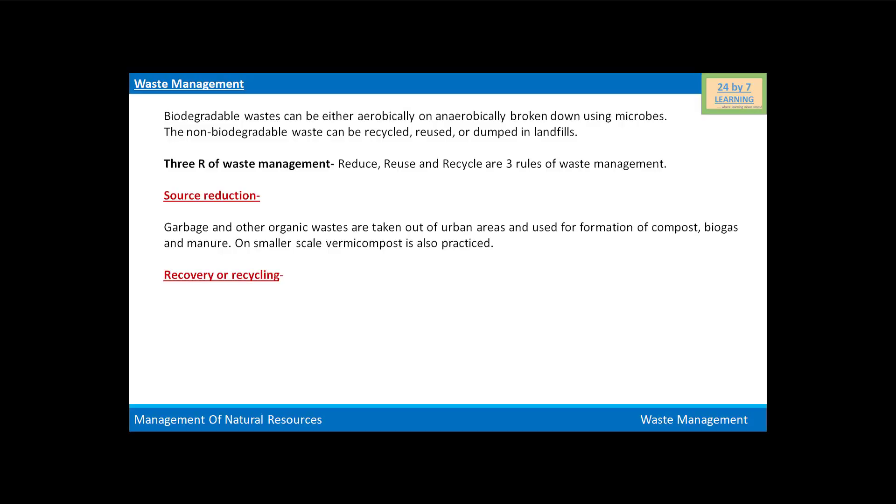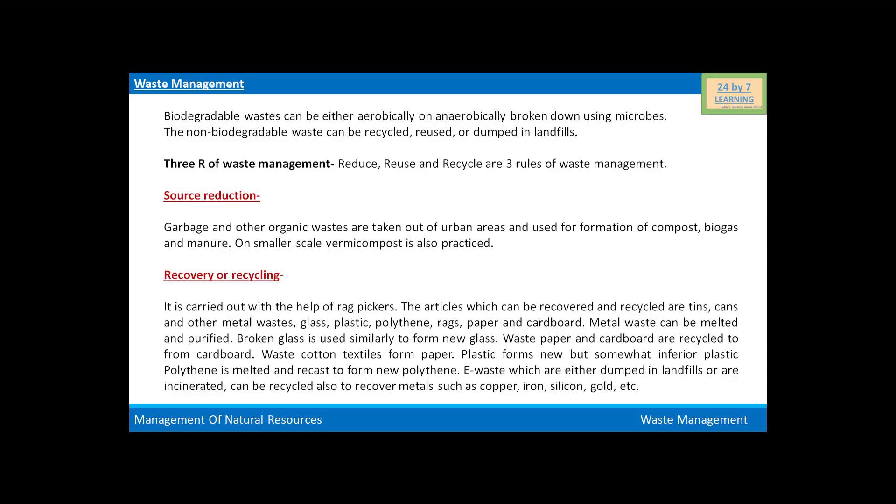Now, recovery or recycling is carried out with the help of rag pickers. The articles which can be recovered and recycled are tins, cans and other metal waste, glass, plastic, polythene, rags, papers, and cardboard. Metal waste can be melted and purified, broken glass is used similarly to form new glass, waste paper and cardboard are recycled to form new cardboard, and waste cotton textiles form paper. Plastic forms new but somewhat inferior plastic, and polythene is melted and recast to form new polythene.